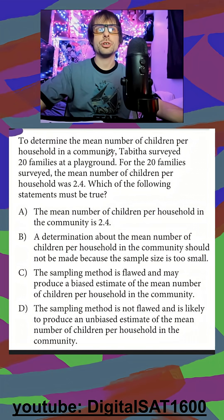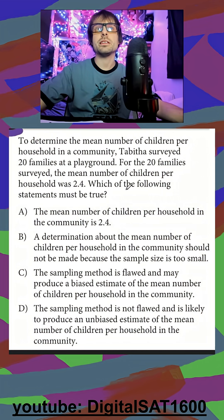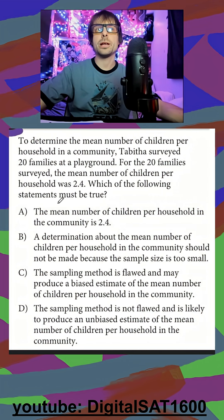To determine the mean number of children per household in a community, this person surveyed 20 families at a playground. For the 20 families surveyed, the mean number of children per household was 2.4. Which of the following must be true? 'Must' — dangerous word.